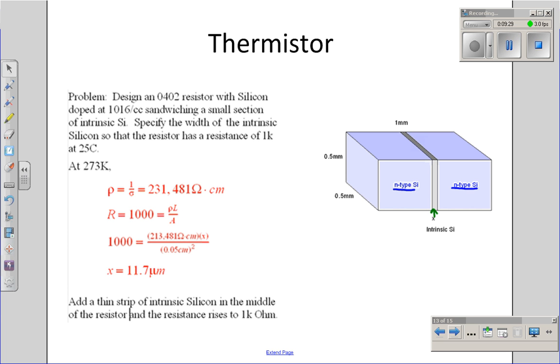If I make it thin enough, I can make the net result 1,000 ohms. For example, if I make that thickness 11 microns, the resistance will be 1,000 ohms at room temperature.